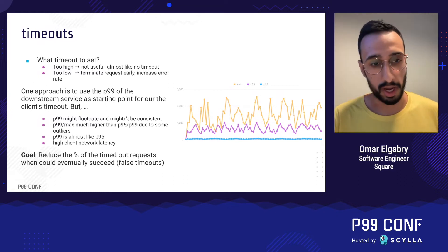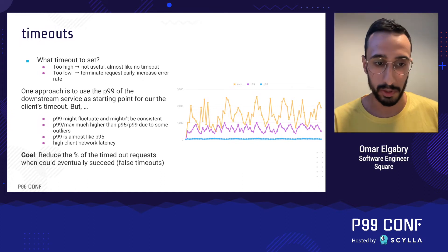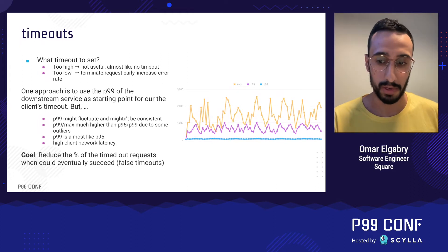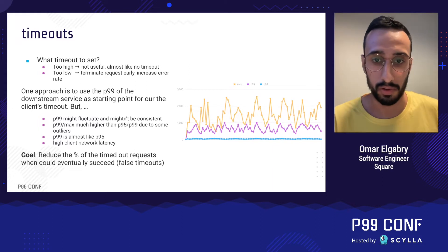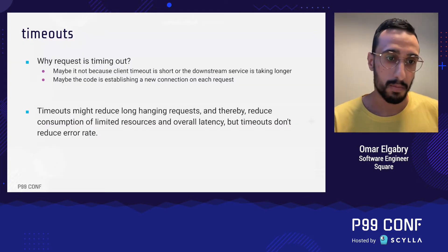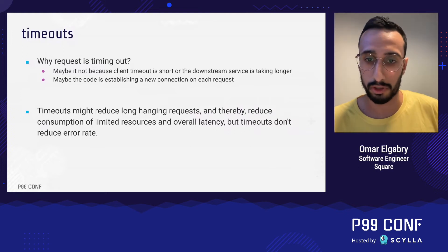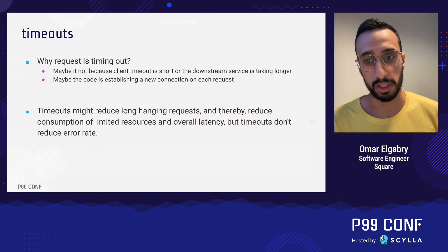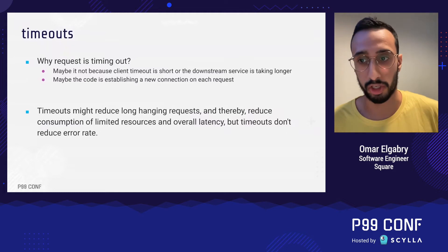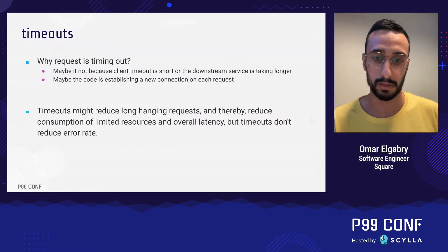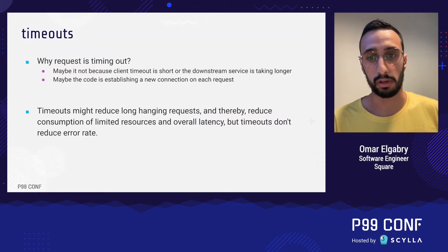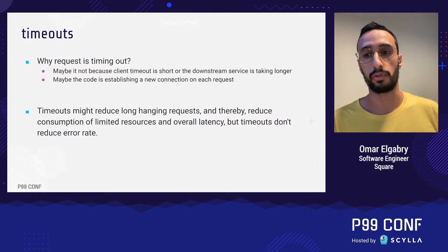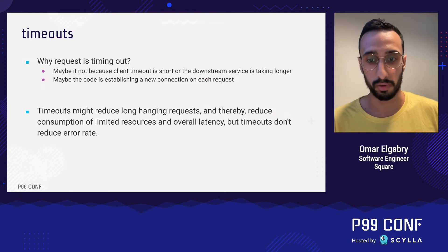Regardless of the timeout value, the goal is to reduce the percentage of false timeouts. If many requests are timing out, the timeout may need to be higher — but first ask: what request is timing out? Maybe the code is establishing a new connection on each request, taking longer to send. Timeouts reduce long-hanging requests and consumption of limited resources, but timeouts do not reduce error rates.